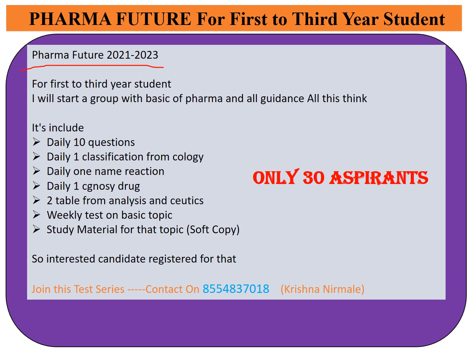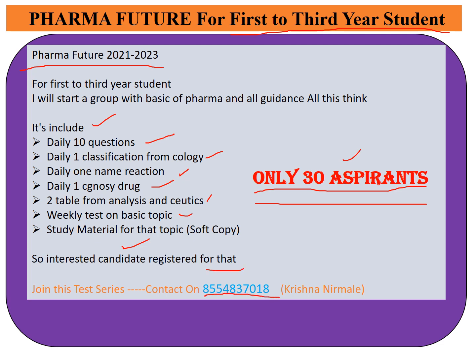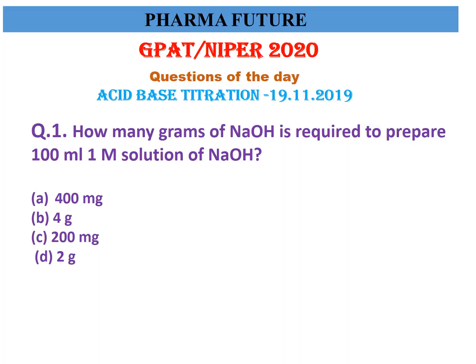Pharma Future channel has started a basic WhatsApp group for first year to third year students. We want only 130 students for that group. The package includes: daily 10 MCQs, daily one classification from pharmacology, daily one name reaction, daily one pharmacognosy drug, one topic from pharmaceutics and analysis, weekly test on basic topics, and study material. Interested candidates can register by contacting us at 85548-3700.